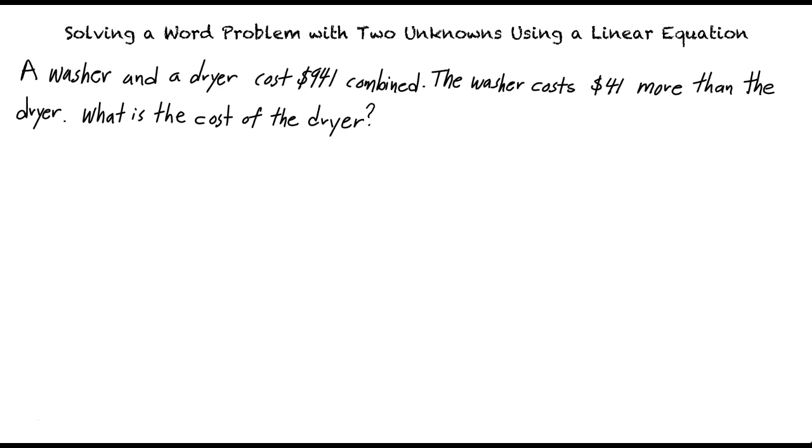In this problem, a washer and a dryer cost $941 combined. The washer costs $41 more than the dryer, and we are asked to find the cost of the dryer. What is the first step to solving this problem? The first step is to assign variables to the unknowns in the problem.